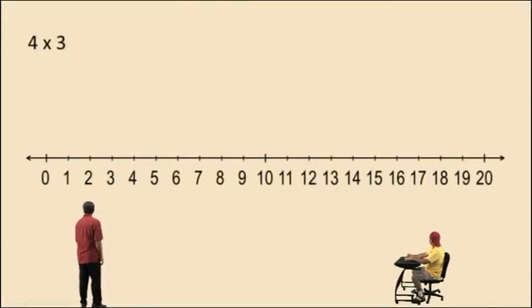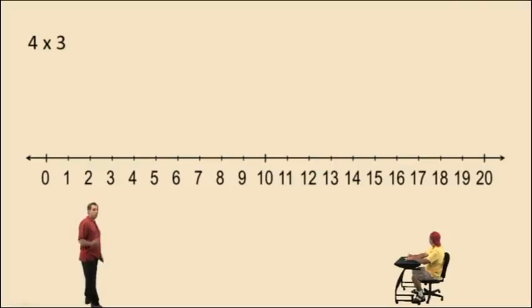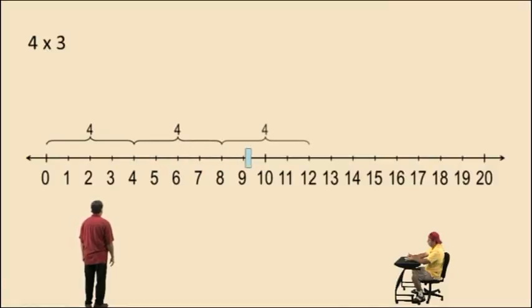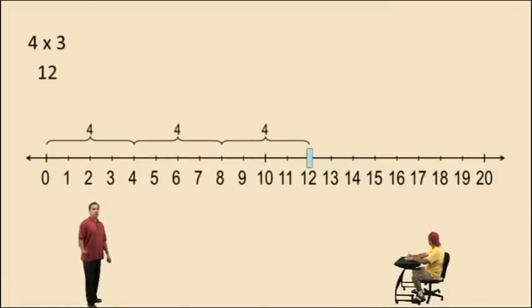Let's do four times three, Charlie, on the number line. What does four times three mean? It means take three fours and add them together. So here we go — there's one four, two fours, three fours, and that gives you twelve.